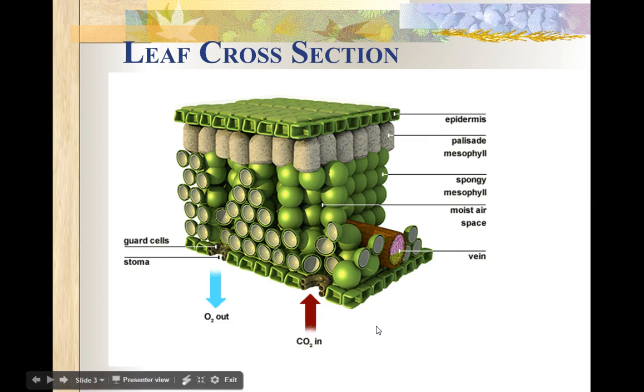So imagine taking a leaf, slicing it in half, and then magnifying it several thousand times so you could see the cells within that cross-section. So this side of the leaf is the upper side of the leaf.